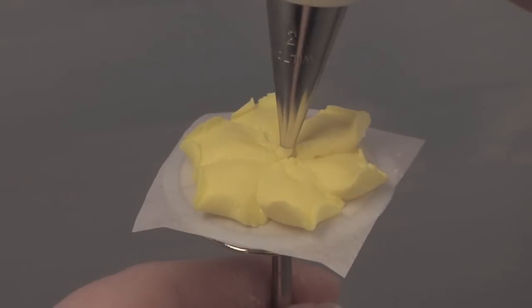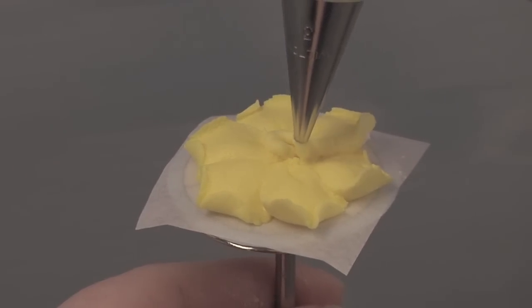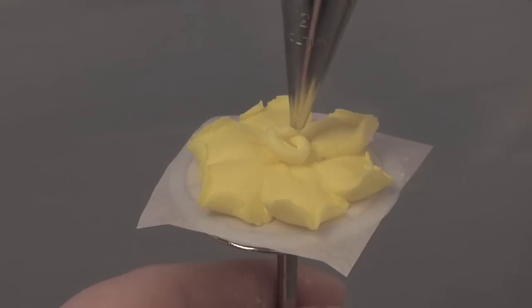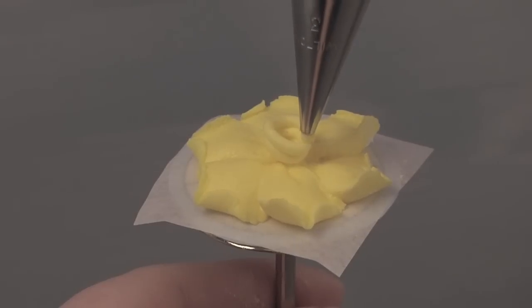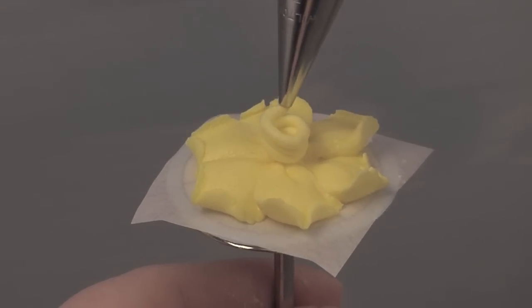To make the daffodil center, hold the decorating bag with a tip 3 at a 90 degree angle. Pipe a dot in the center, then move in a circular motion, piping an open coil. Make sure the base of the coil is more narrow than the top.